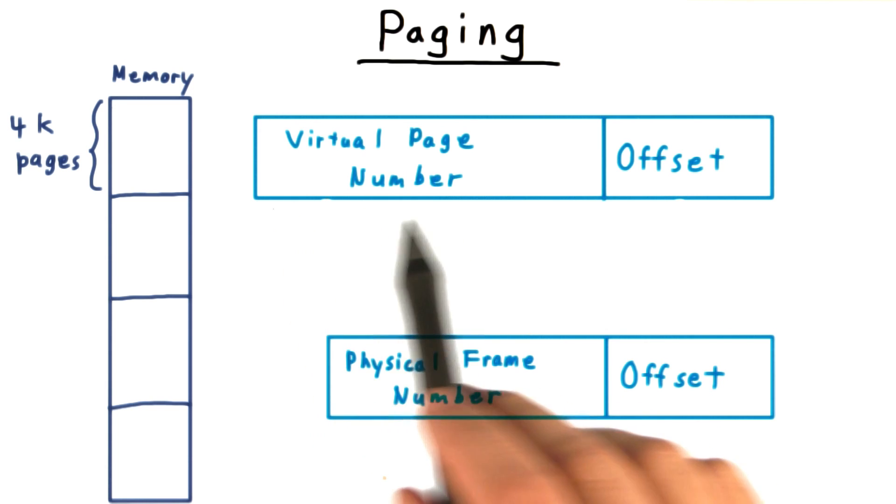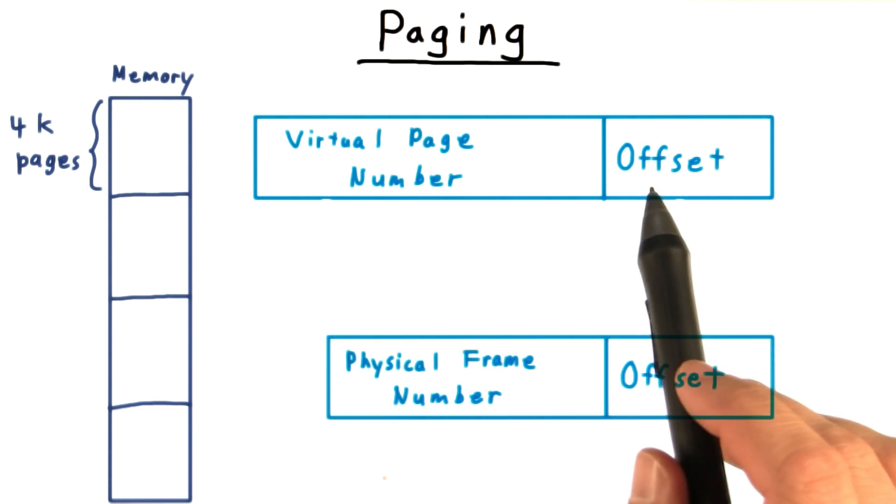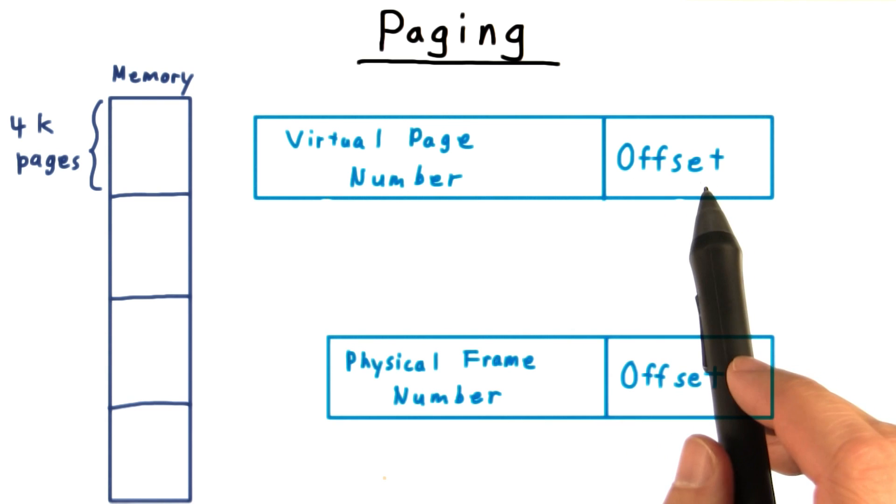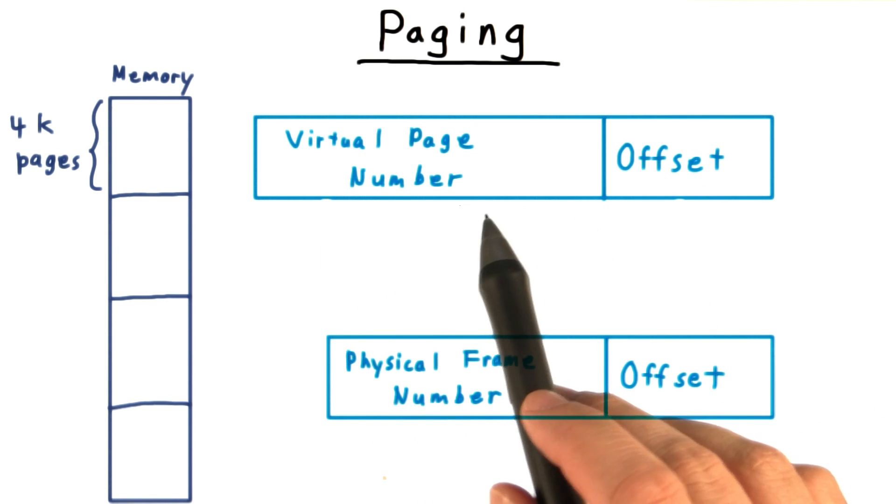Correspondingly, the virtual address space is similarly divided into pages. Again, lower order bits determine the offset within a page. The higher ones determine the virtual page number.